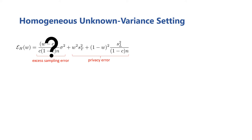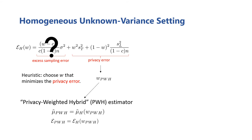However, we still know the privacy error, so as a heuristic optimization, we can choose a w that only minimizes this portion of the expression. We call the resulting hybrid estimator that uses this weighting the privacy weighted hybrid estimator, or PWH estimator.